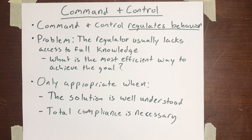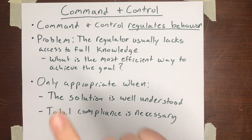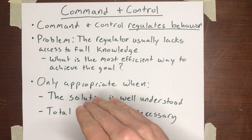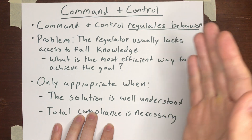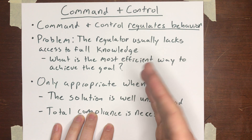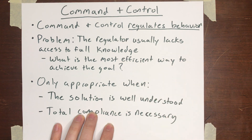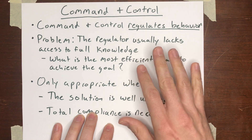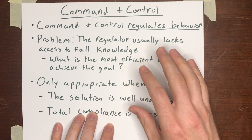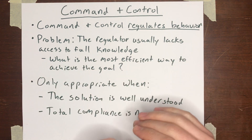In this final video on externalities, I want to say a few brief things about command and control. The definition of command and control is a solution to an externality — a way of addressing an externality — that regulates behavior. Instead of, like with a Pigouvian tax or subsidy, trying to make the price efficient in the market and guide the market to the right level of output, and instead of leaving things to people's bargaining decisions like with the Coase theorem, command and control is where the government comes in and says you must do this, or you must not do the other thing.